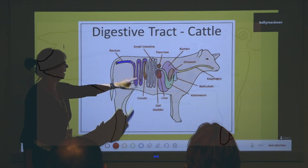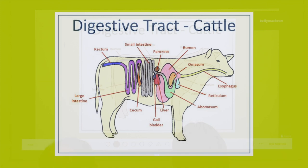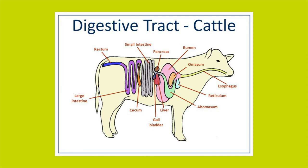Now we get into something interesting. Cows and ruminants in general have a more elaborate digestive tract. They eat grass - stuff we can eat, but it'll just come out looking pretty much the same way it went in. Other animals can utilize it, and they're divided into two major categories: foregut fermenters and hindgut fermenters. Cattle are the classic foregut fermenters - they have four compartments to their stomach.